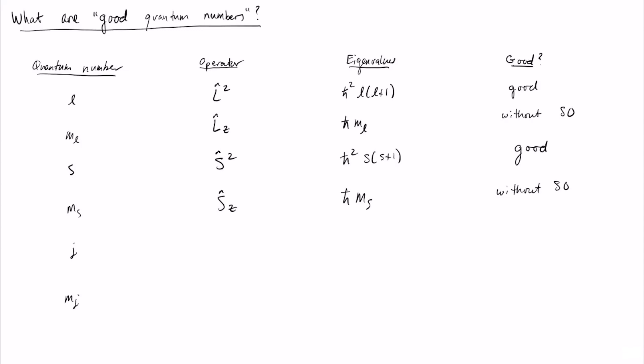Finally we have our two new quantum numbers. The quantum number j corresponds to the operator j squared, which has eigenvalues ℏ² j(j+1), and this is always a good quantum number — it is the total angular momentum, and this is the complete statement that the laws of physics are invariant to rotation. The quantum number m sub j corresponds to j_z, which takes eigenvalues ℏ m_j, and this will also always be a good quantum number.